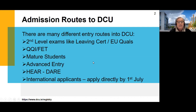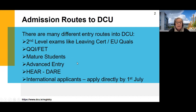Advanced entry is not based on points. If you're doing something similar and you've completed year one, you can transfer into year two of a similar programme. Then we have the HERE and DARE schemes for students from disadvantaged backgrounds or students with a disability. And then we have international students, who apply directly to DCU — they don't go through the CAO system.